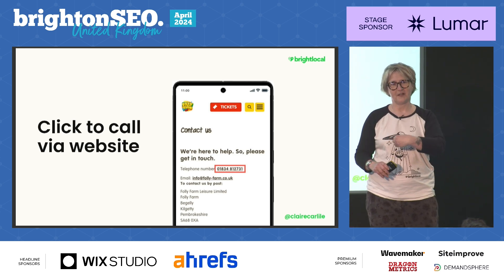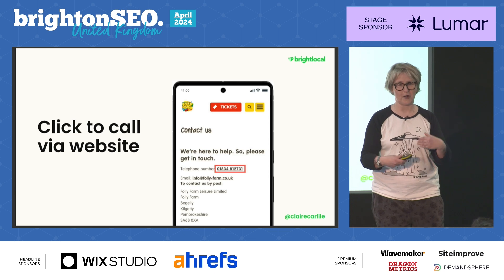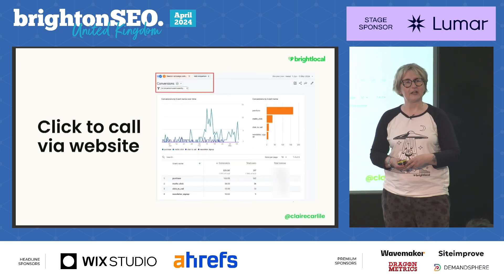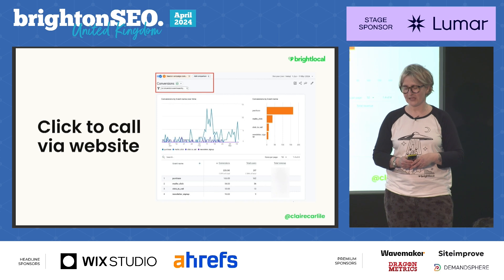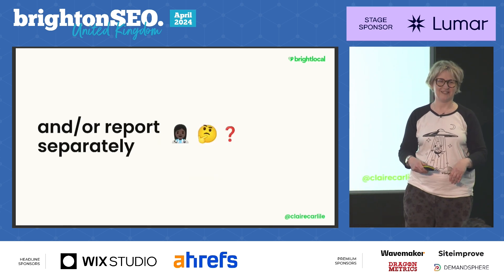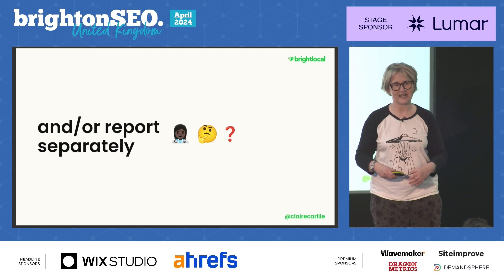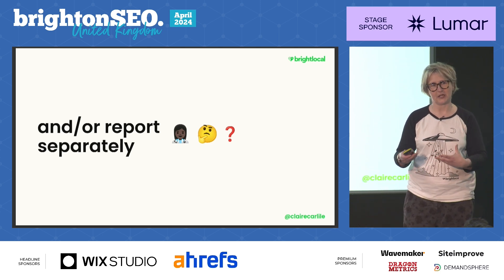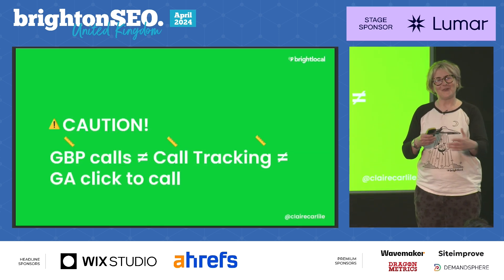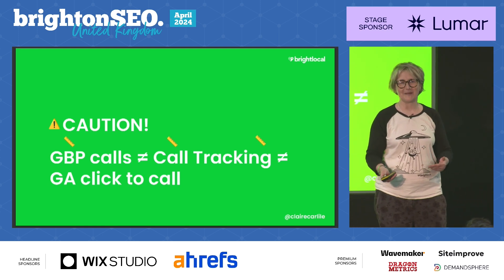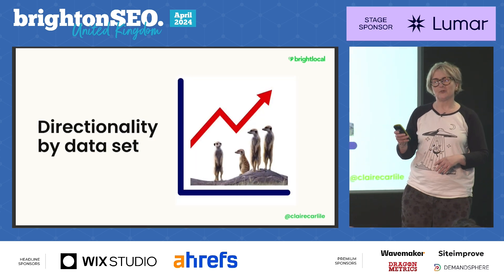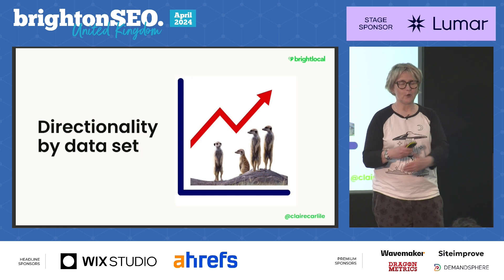If someone comes to our website via Google Business Profile and then clicks to call, we need to attribute that to Google Business Profile, and we can see that in Google Analytics 4 — again, we need to make sure we've UTM tagged for that. When reporting to the client or stakeholder, you might choose to put all of that in one bucket, or better still, report separately, because then we can see if there have been changes and diagnose what happened. We also need to know that GBP calls are not the same as call tracking or click-to-call, as they all measure different things using different measurement protocols. So it's really important to think about directionality by the data set, not across data sets.